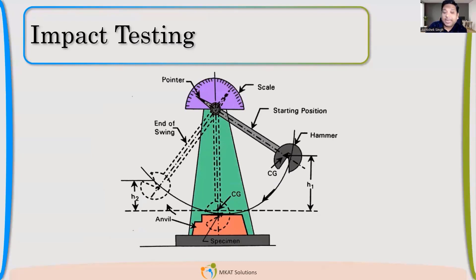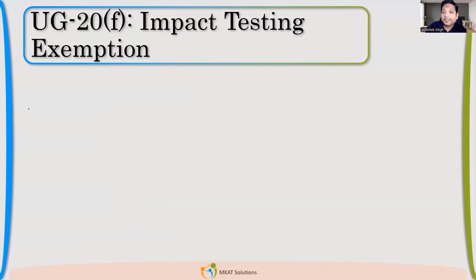Now, if I want to avoid this testing, what are the clauses which can, within a few minutes, let me determine whether impact testing is required or not? That will be very useful — just by sitting on your chair, you can say it is not required. The first clause which talks about impact testing exemption is UG20F.